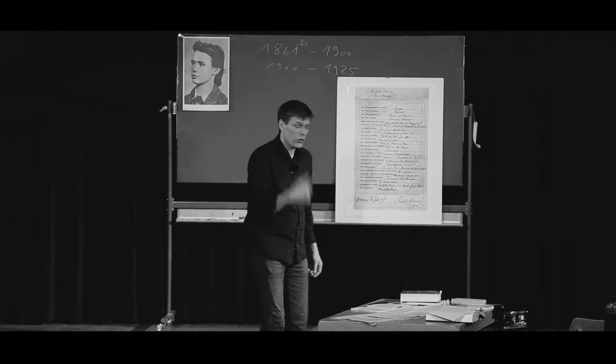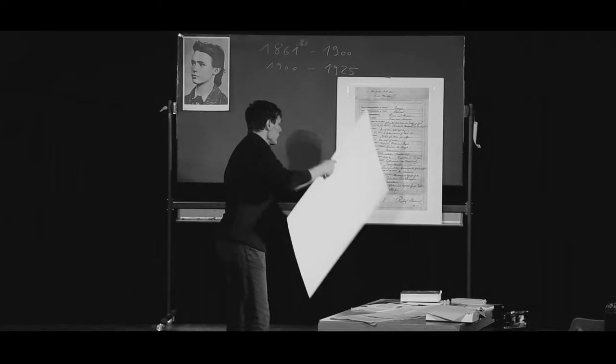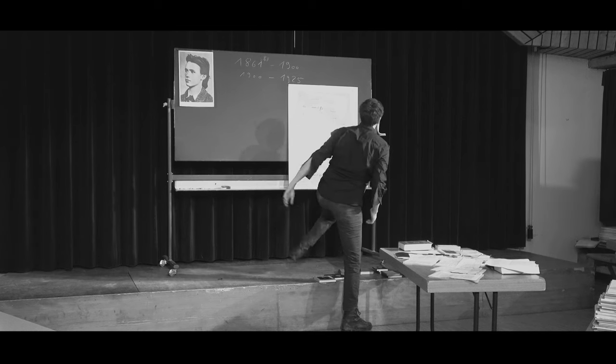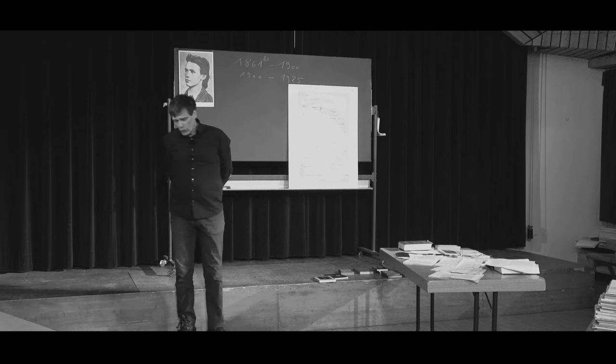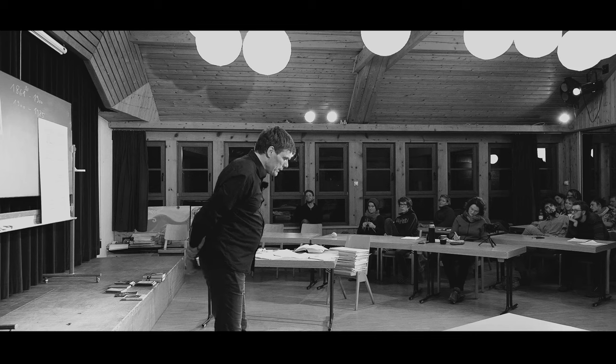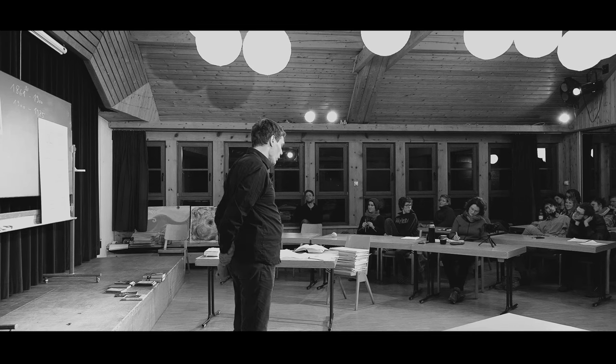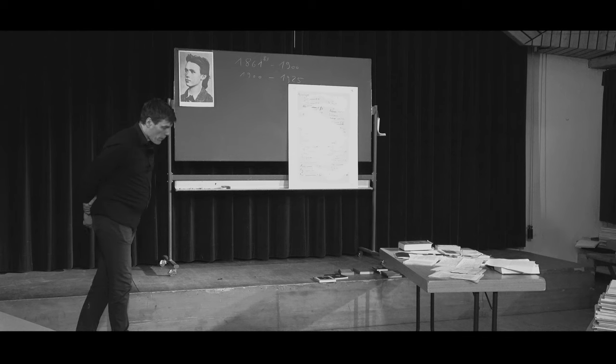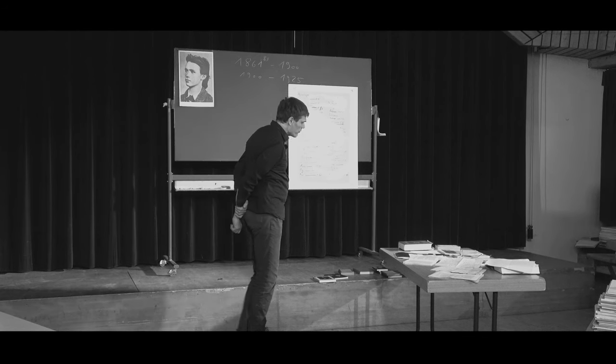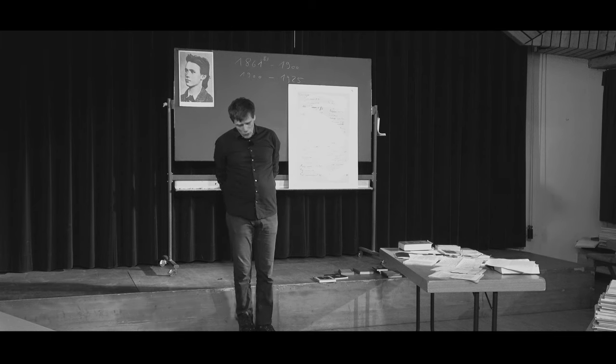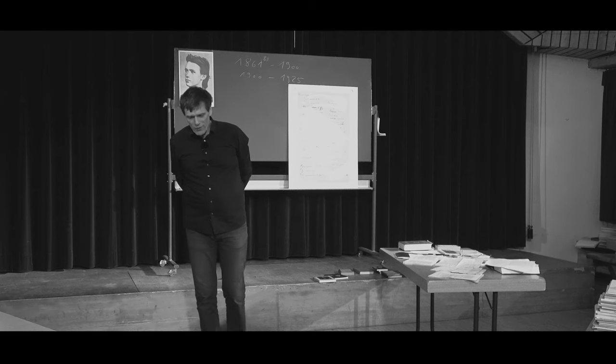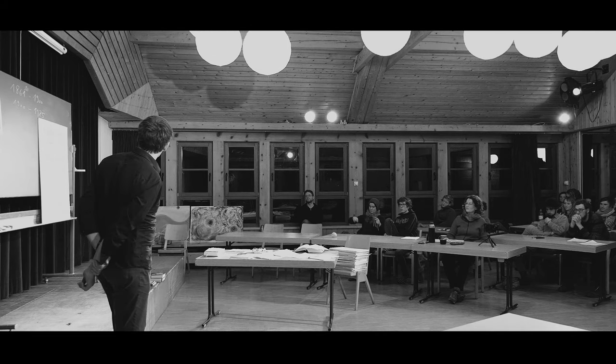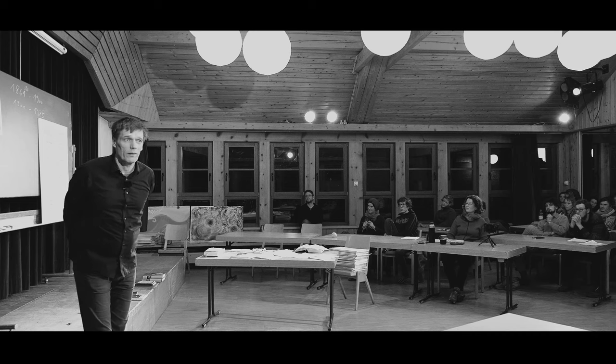Jetzt noch ein kleines Dokument aus dieser ersten Lebensphase. Er zieht 1899 nach Berlin, die Goethe-Sache ist endlich fertig. In einem seiner Bücher aus dieser Zeit hat mein Freund Walter Kugler einen Zettel gefunden - es gibt viele solche Zettel. Da macht er eine Art Hauskassenbuch, wofür gibt er sein Geld aus, was immer knapp war. Das ist wunderschön, ungefähr um 1900.